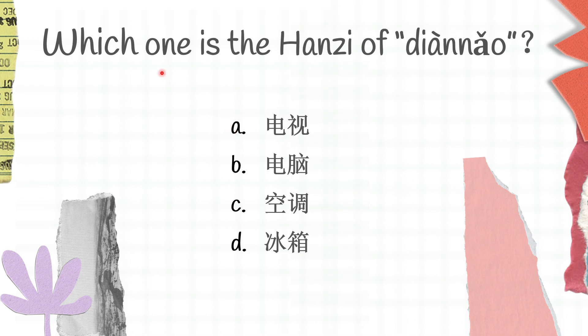The next question: which one is the character for 电脑 (dian nao)? Which one do you think is the right answer? A is 电视 (dian shi), B is 电脑 (dian nao), C is 空调 (kong tiao), and D is 冰箱 (bing siang). The correct answer for this question is B.